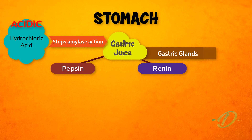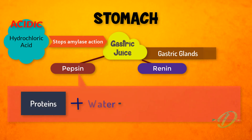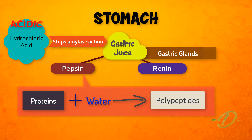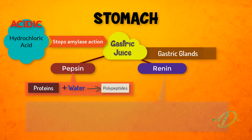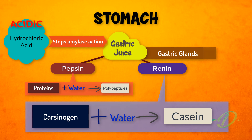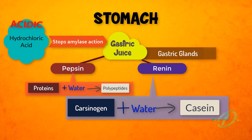the action of pepsin and renin enzymes. Pepsin hydrolyzes protein molecules into smaller chains of polypeptides. Renin coagulates milk by converting the soluble milk protein caseinogen into insoluble calcium caseinate.